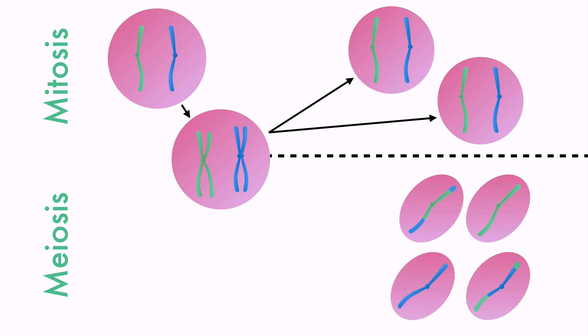In meiosis, things start the same way. A cell has to duplicate its chromosomes, but from here there are some differences. During prophase, the homologous pairs swap sections of their chromosomes, creating more variation in the genes.